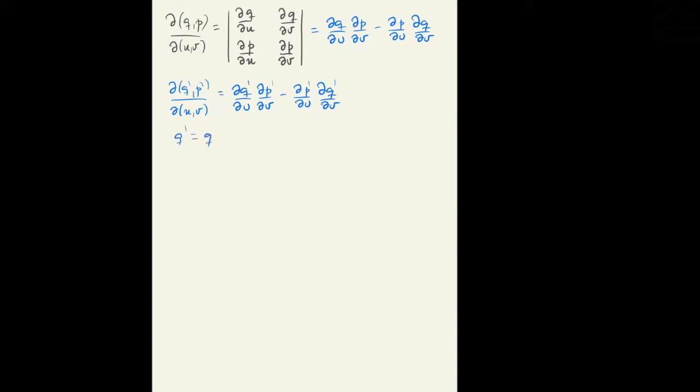Now, if Q prime is equal to Q plus ∂H/∂P delta T, then ∂Q'/∂U is equal to ∂Q/∂U plus the second derivative of the Hamiltonian with respect to U and P delta T.